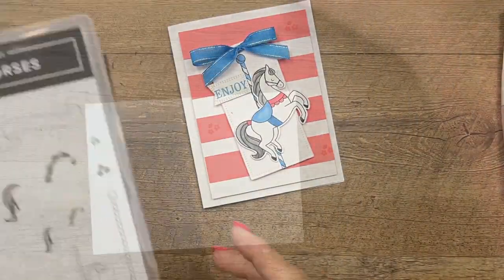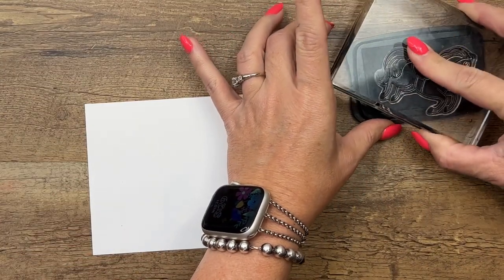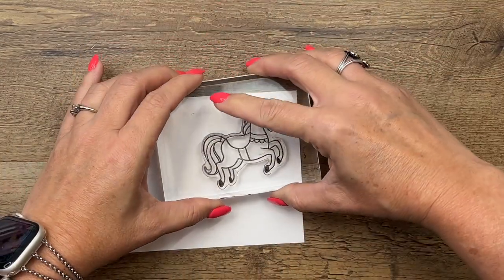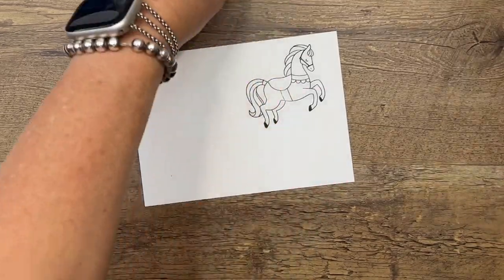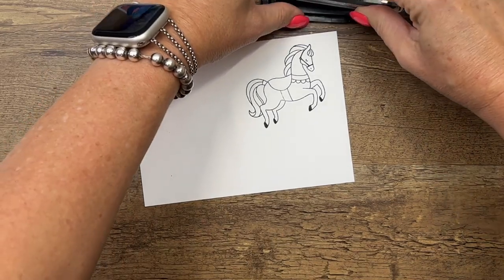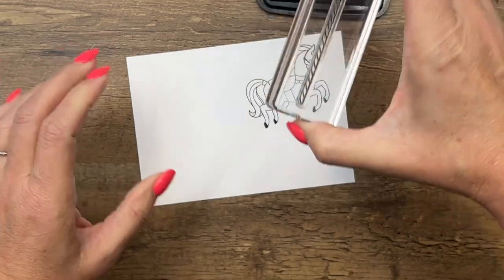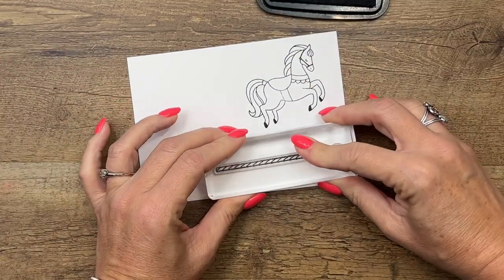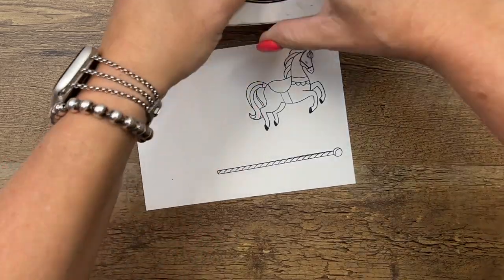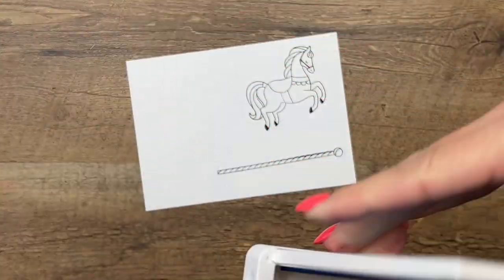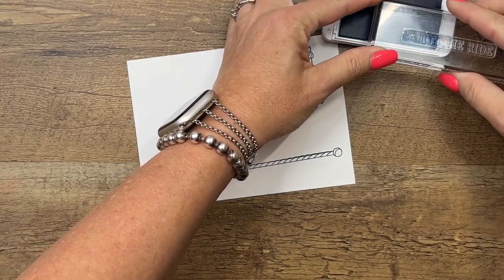Alright, let's do our stamping. I've got our carousel horse and I'm going to stamp her in Memento black on basic white cardstock. I've got the little carousel pole also in Memento black. Then I've got the sentiment and we're going to use Azure Afternoon. I am only going to ink up the word 'enjoy'.